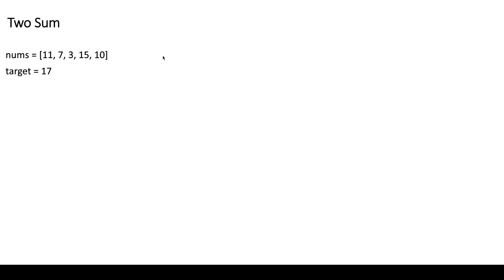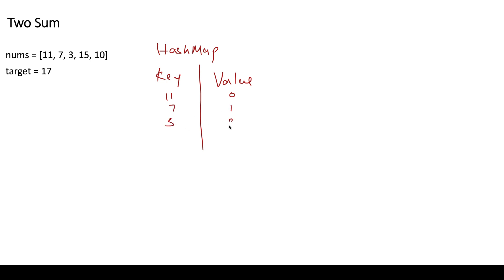In the hash map approach, we create a hash map with key-value pairs. We store all the elements as keys and their indices as values — so 11 at index 0, 7 at index 1, 3 at index 2, 15 at index 3, and 10 at index 4. Once the map is created, we iterate over the array. If we pick element 11, the second element needed is target minus 11. With target 17, we need 6.